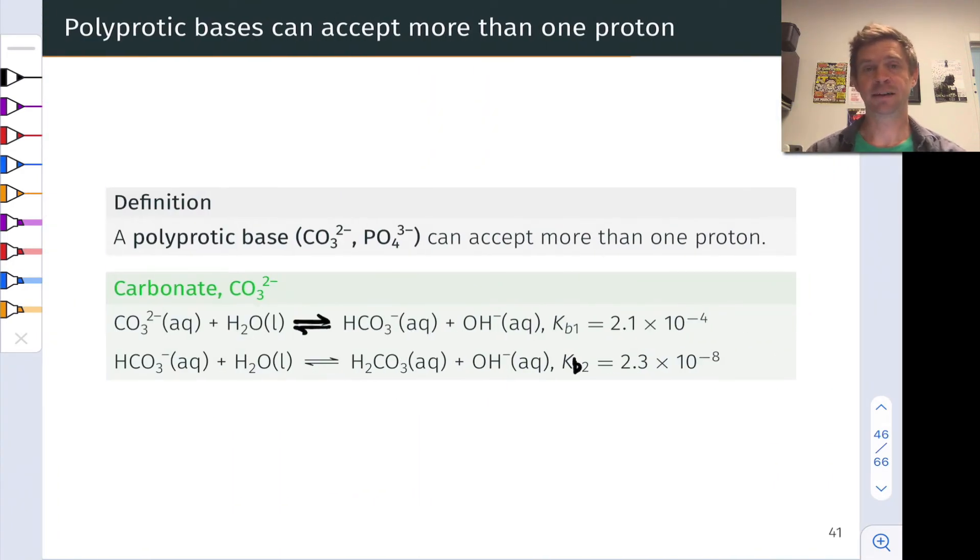Just as acids can have more than one ionizable or removable proton, bases can contain more than one basic site and have the capacity to accept more than one proton. These are what we call polyprotic bases. Two examples of polyprotic bases are given in formula form on the slide, CO32- and PO43-, and both of these can accept more than one proton.